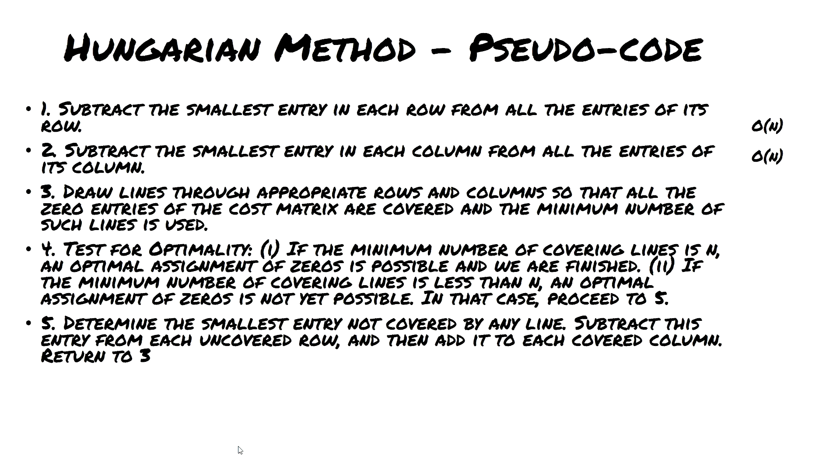The time per iteration depends on how we draw the lines. To draw the lines, we go through each zero in the matrix and apply the lines to cover most of the zeros in the matrix. At most, there could be N squared zeros. So it takes the order of N squared for each iteration.